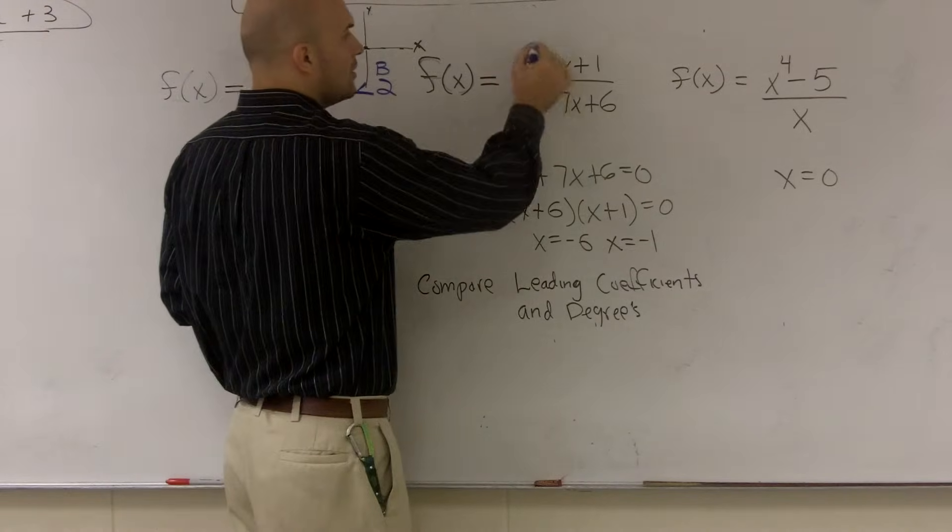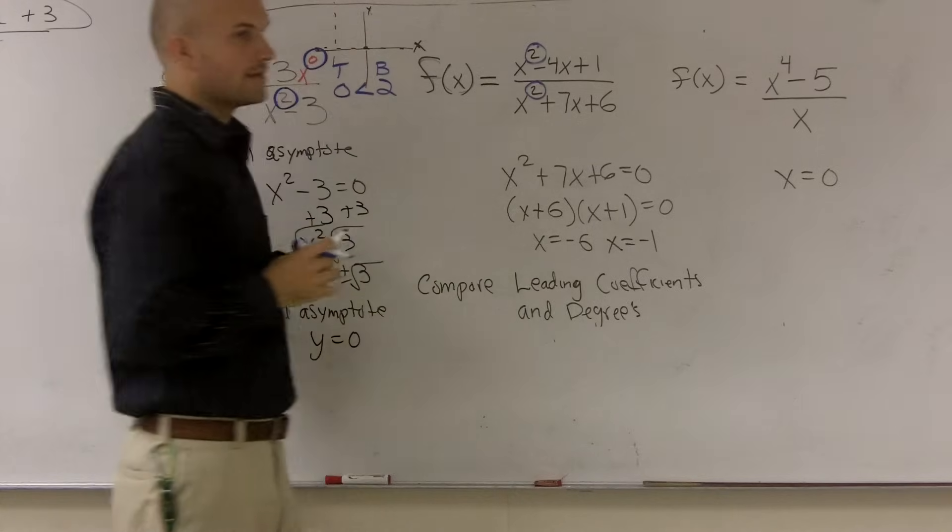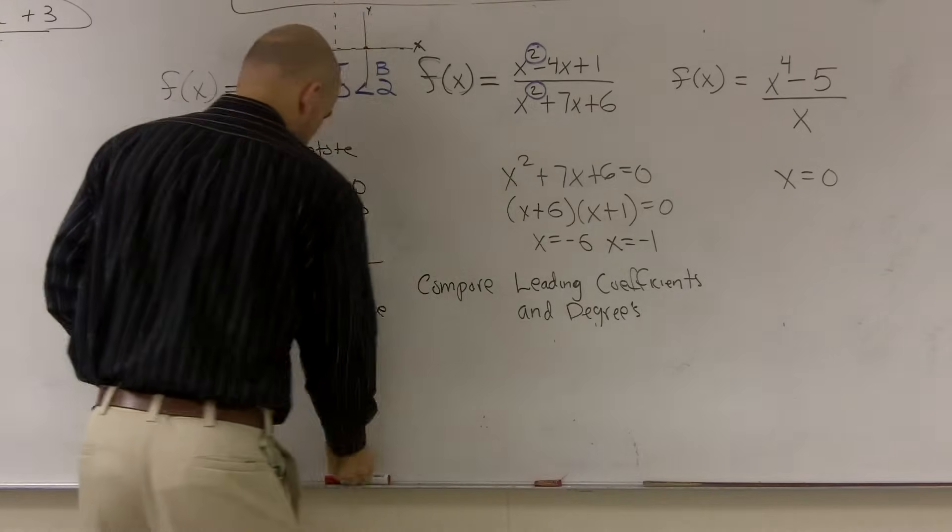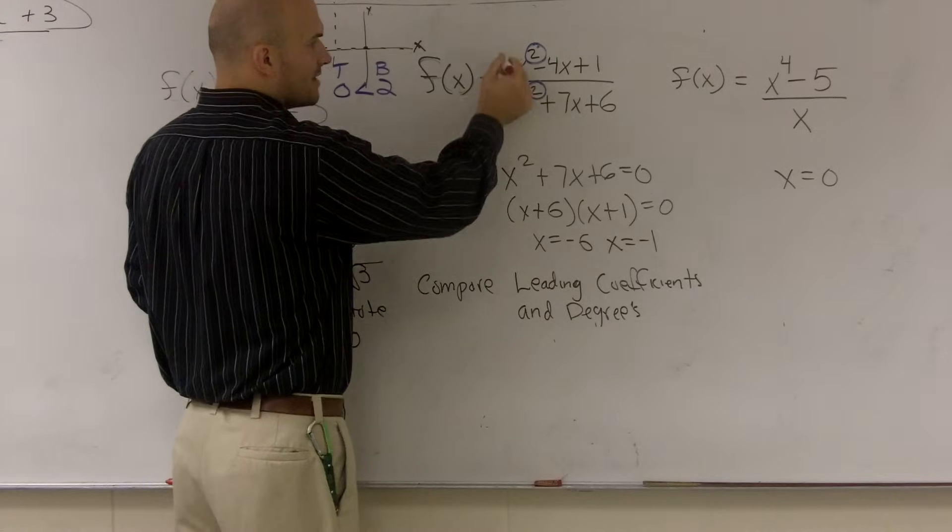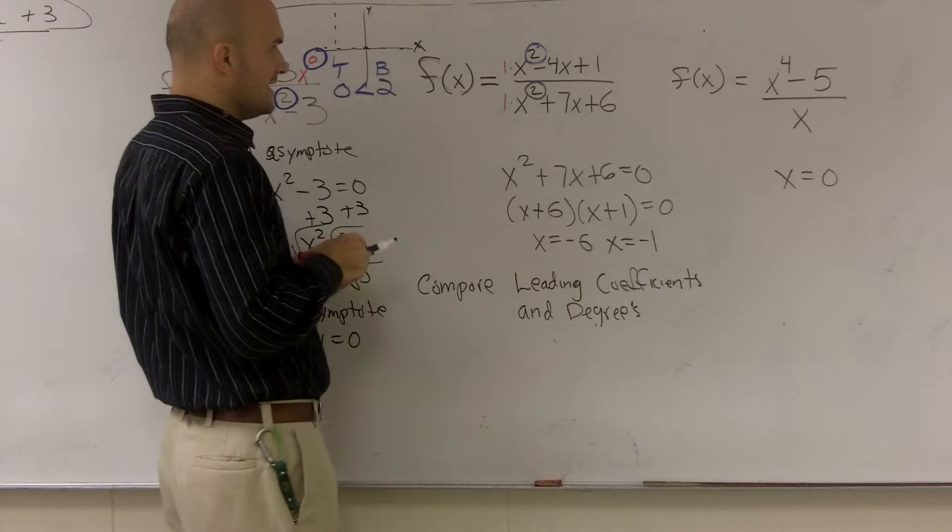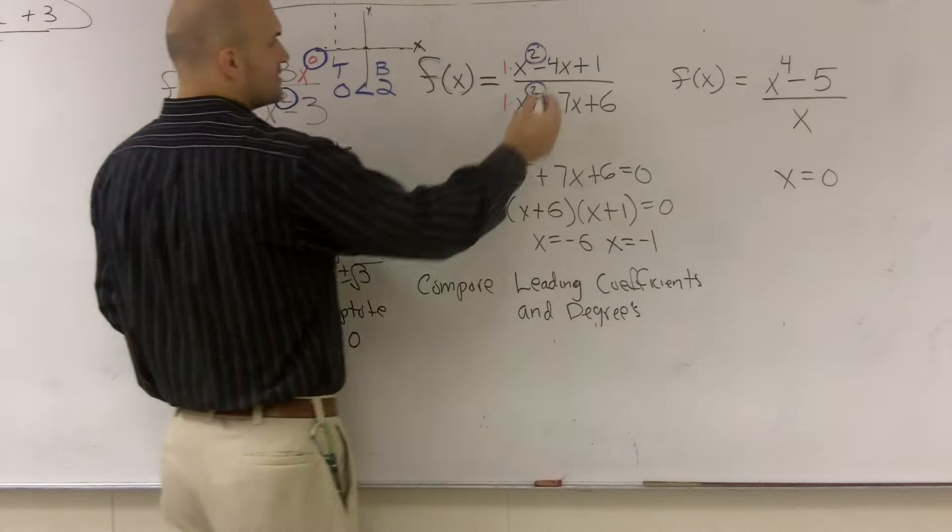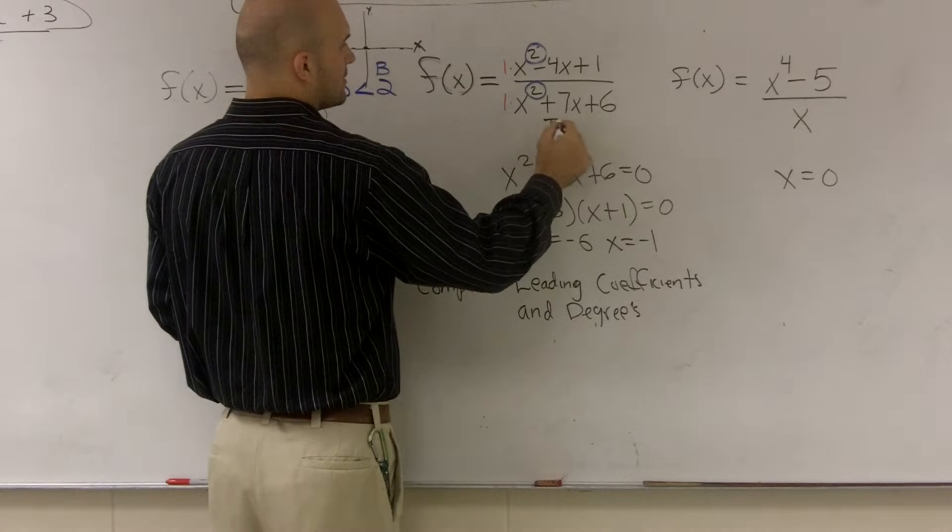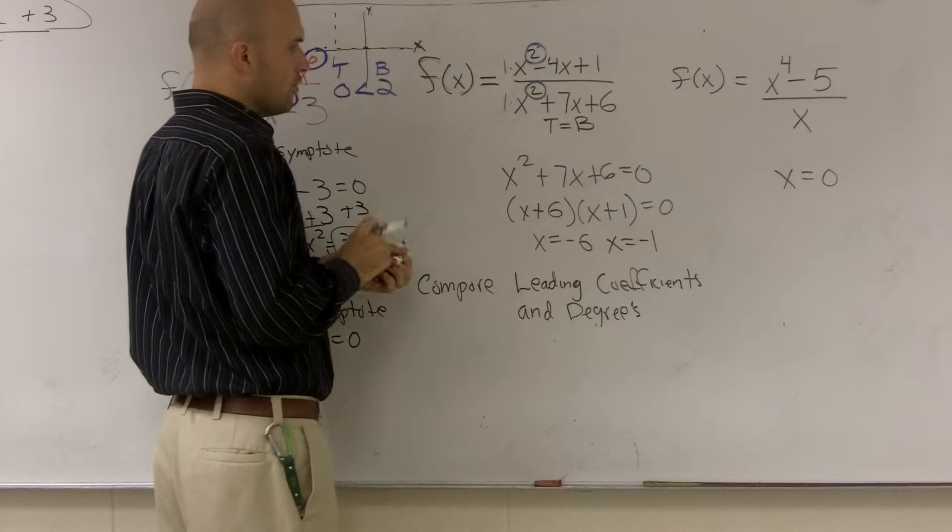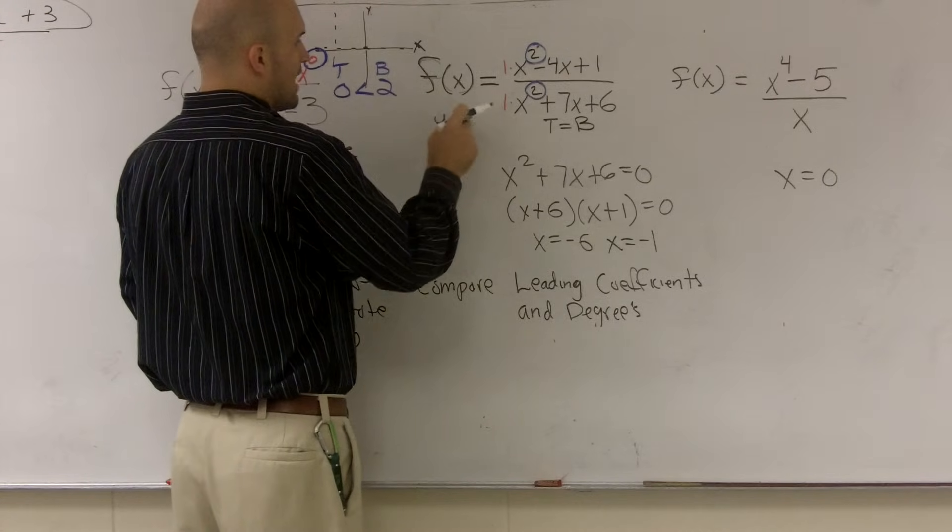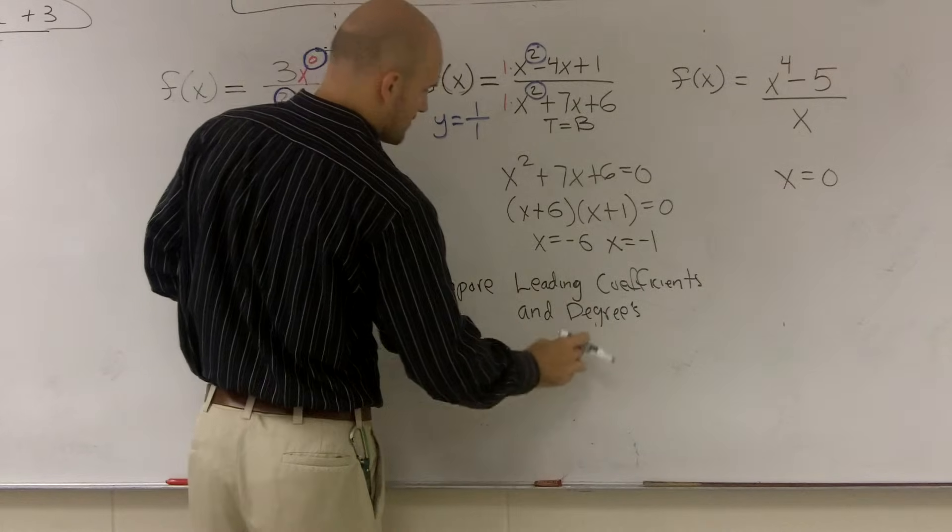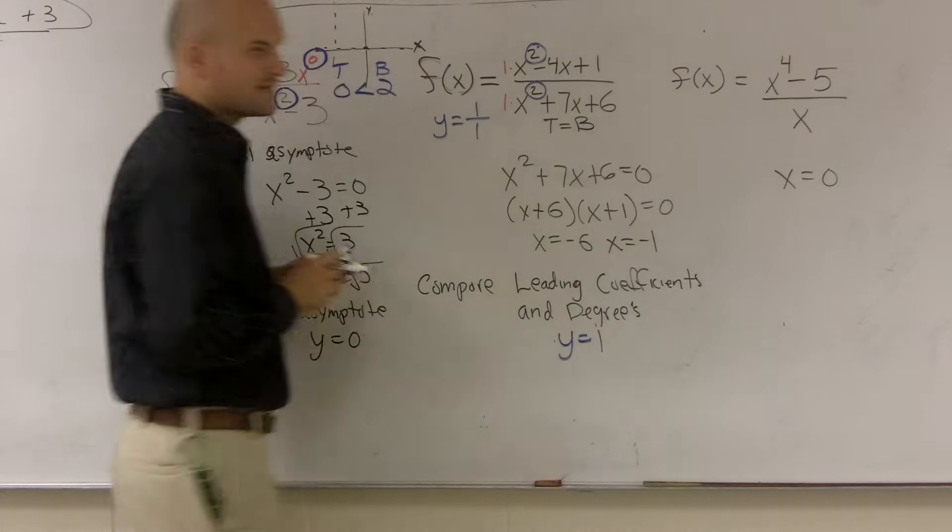Now, when you have them equal, what you do is you take the number in front, which there's no number in front here, right? So we write 1. You take the number in front and you divide them. So whenever they're equal, the top is equal to the bottom, we take our coefficients and we divide them. So we say y equals 1 over 1, which is 1 in this case.